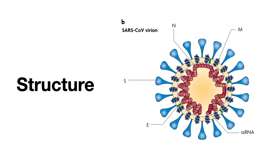Let us look into the structure of the virus. It has a membrane glycoprotein, a nucleocapsid protein, an envelope protein, and a spike protein. Apart from these four proteins, it has a single-stranded RNA.